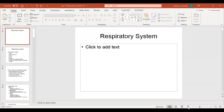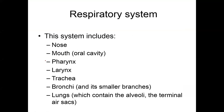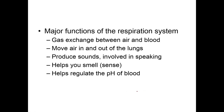The respiratory system is our breathing system. It includes the nose, the mouth, the pharynx, larynx, trachea (which is your windpipe), the bronchi, and the lungs. Inside the lungs, you have the site of actual gas exchange, which is the alveoli.